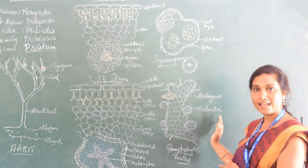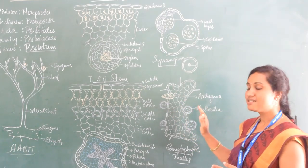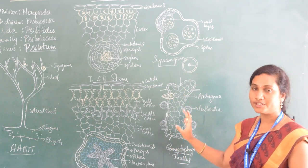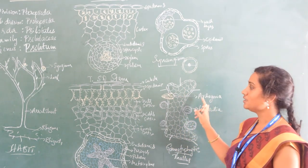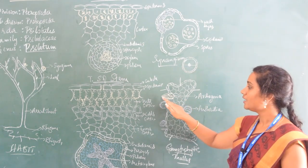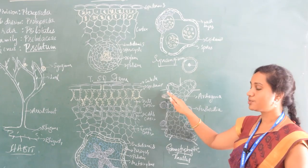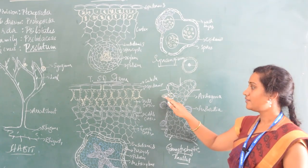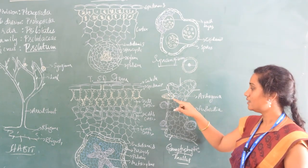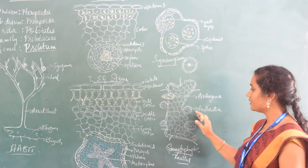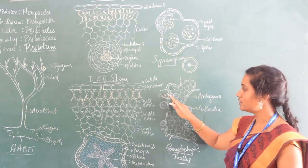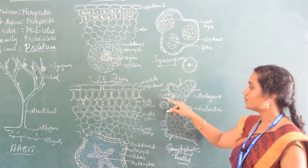Antherozoids are released from the antheridia into the environment. Since the plant body is monoecious, antheridia and archegonia are developed on the same gametophytic thallus. The archegonium is a female reproductive structure developed at the apical region of the gametophytic thallus. Each archegonium has an outer layer of neck cells providing protection, and contains neck canal cells, a venter canal cell, and a large egg cell at the base.